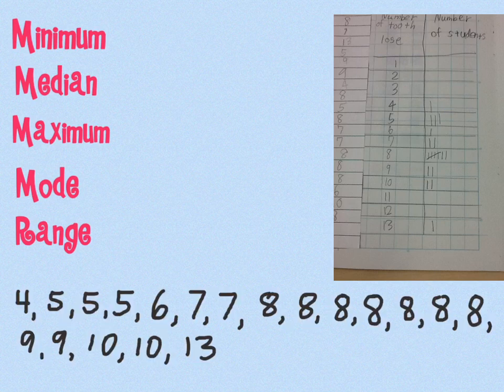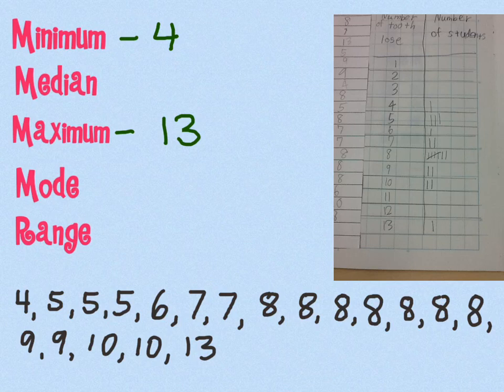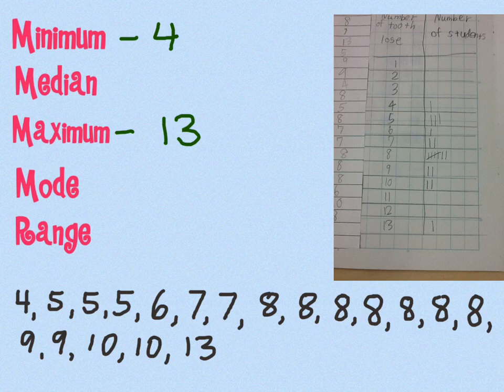So before I tell you, can you see what is the minimum and the maximum value? It would be four and thirteen. And to figure out the range then, you do some subtraction of the maximum minus the minimum. And hopefully you can do this, and you'll know that the range is going to be nine.